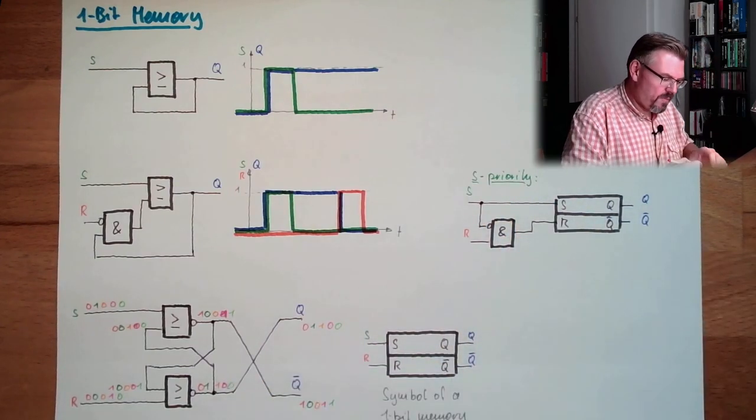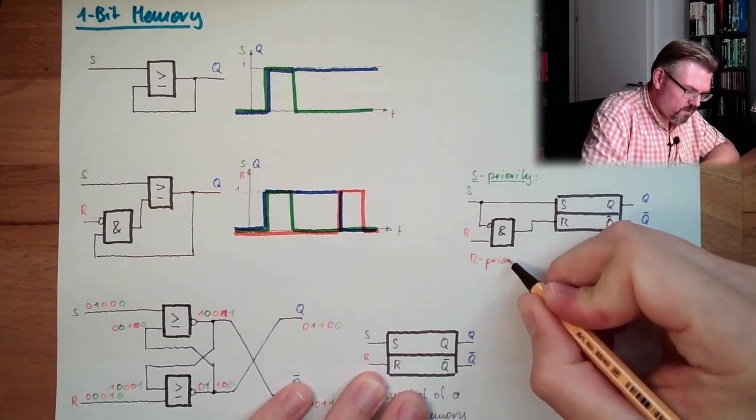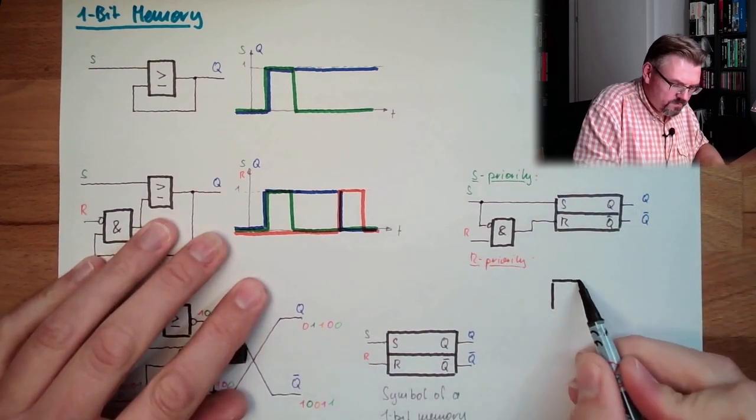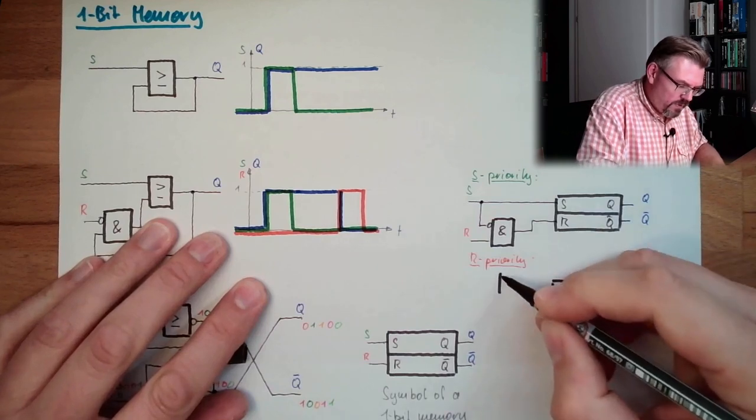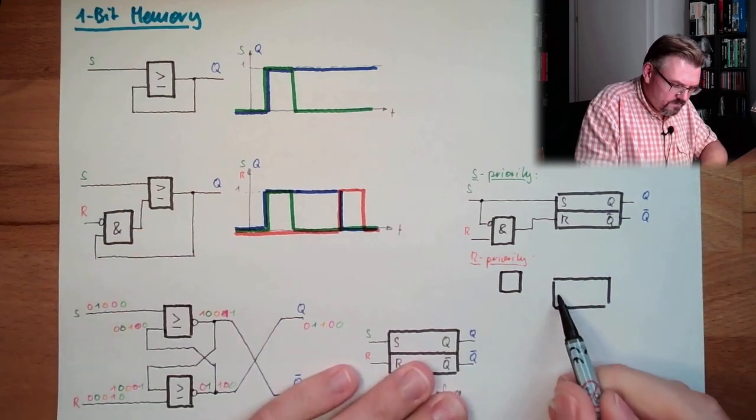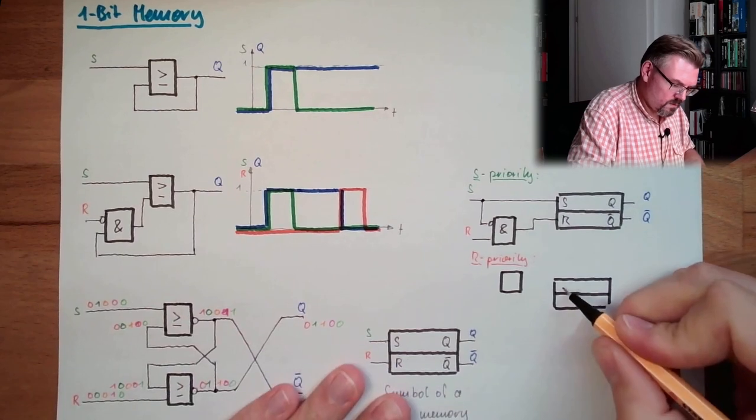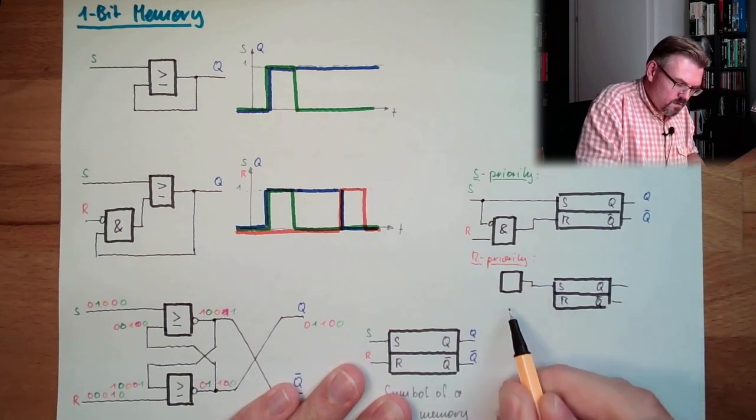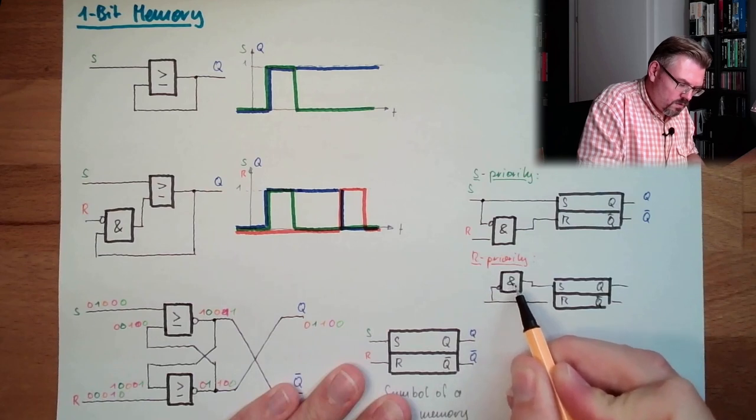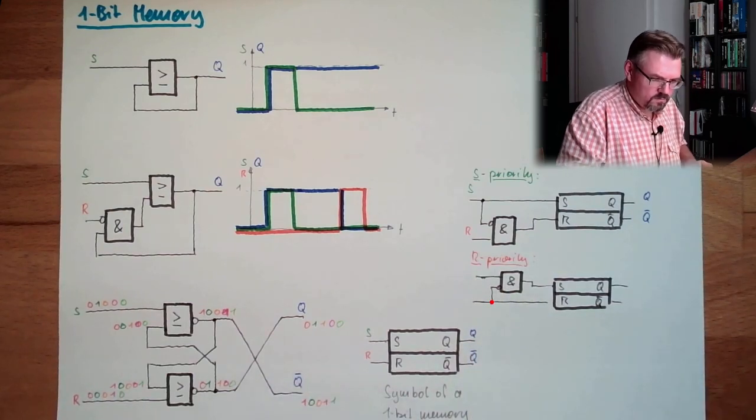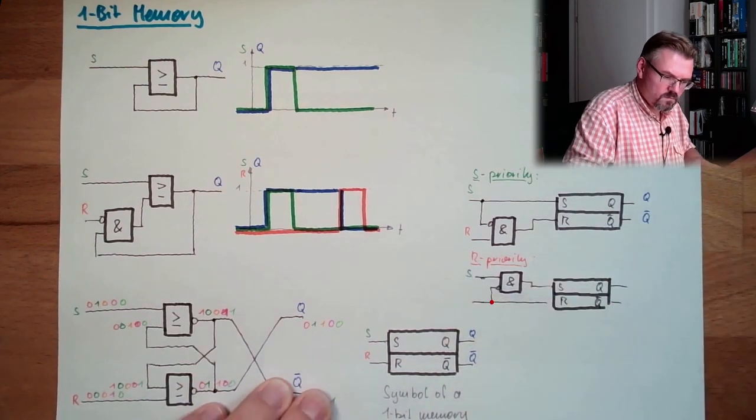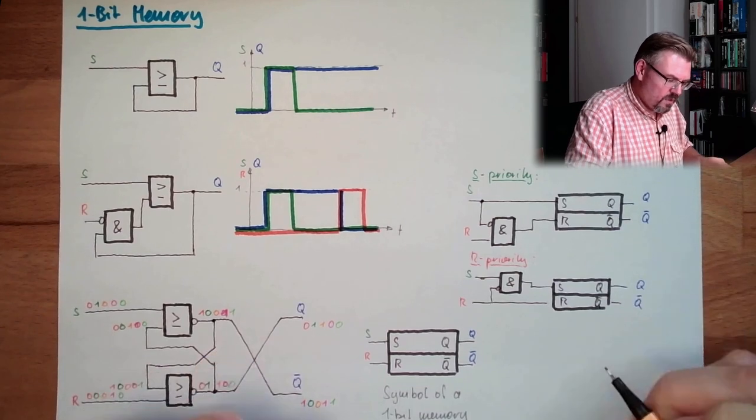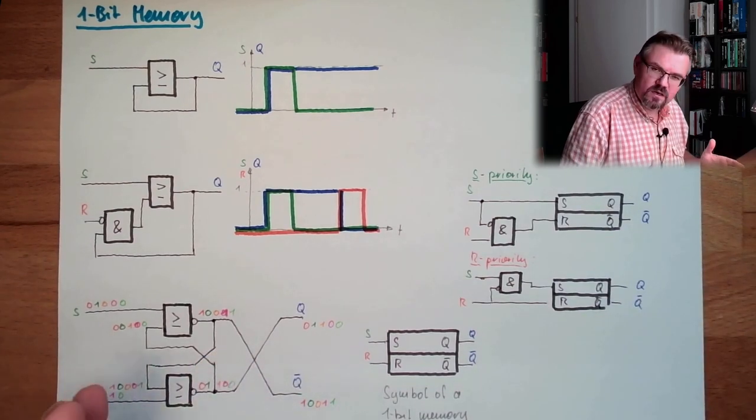Then exactly the same way but vice versa would be R priority. How does this look like? Well, we have here again the memory. Then we have this AND, and here NOT S and NOT R. So here this AND with the inverted input will block the S signal whenever R is here. So we have R priority.